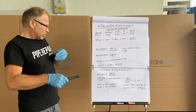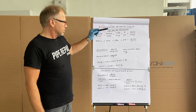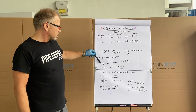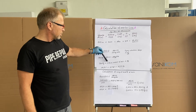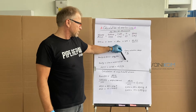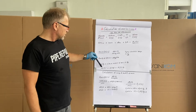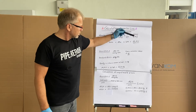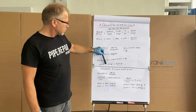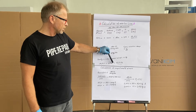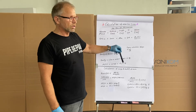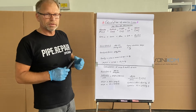Now, to convert this 14.13 liters into kilograms — this will be the total amount of resin in kilogram. That means 14.13 liters multiplied by 1.1 kilogram per liter equals 15.54 kilogram. And this is the total amount of resin we need for 10 meters.